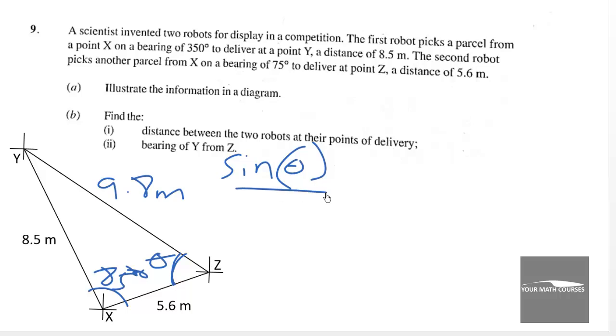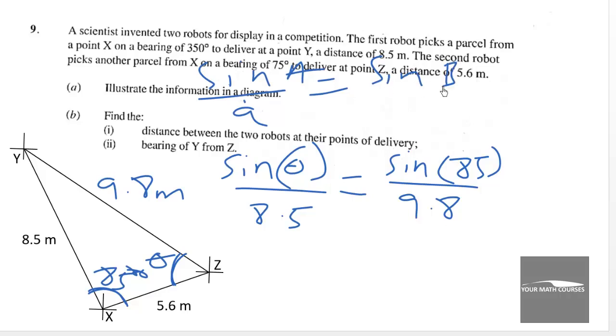We have the side opposite that angle is 8.5 meters. It will be equal to sine of the angle which is the known angle here 85 degrees over 9.8. So that is the sine rule for you: sine a over a is equal to sine b over b or sine c over c. So that is what we are using here.